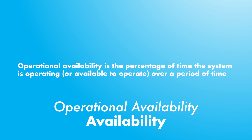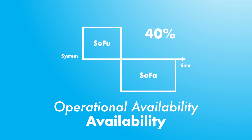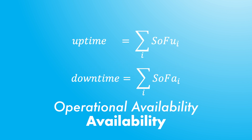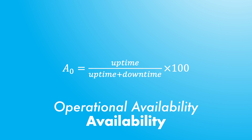Operational availability is a measure of the real average availability of a system over a period of time — we call it real because this is the availability we actually experience. For an aircraft, this is the percentage of time the system was operating or available to operate, calculated based on actual events. Operational availability is the uptime divided by the uptime plus the downtime. Because there is a relationship between the state of functioning and the uptime, and the state of failure and the downtime, we can transform this equation accordingly.